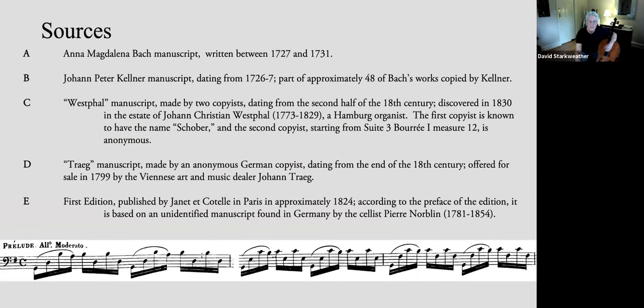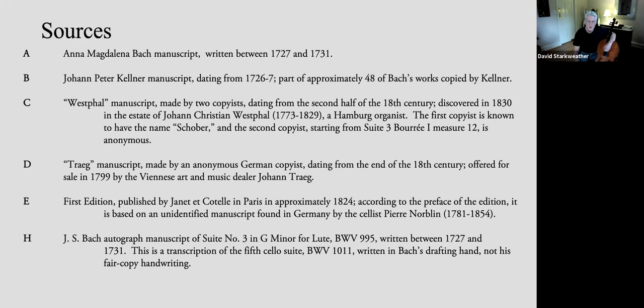And then we have the third source, C, is known as Westphal, discovered in 1830, but had been written sometime in the second half of the 18th century. And finally, D is the Trier manuscript. An anonymous copyist. And it was offered for sale in 1799. So we don't really know where it came from or who wrote it. And finally, the first edition came out in 1824. And it actually clarified some things perhaps, but it made a lot of mistakes and editorial changes too. So this is a very suspicious edition to rely upon.